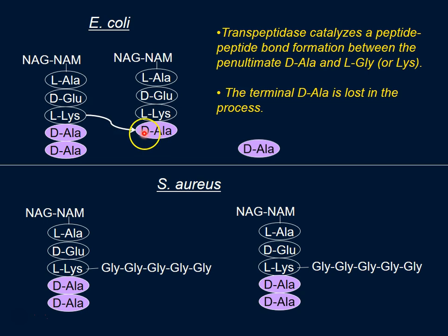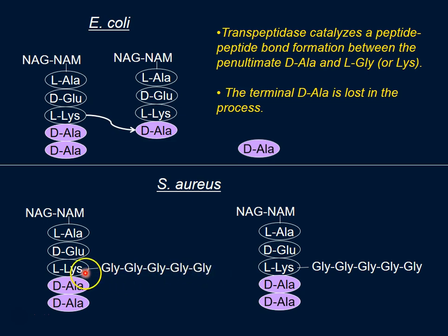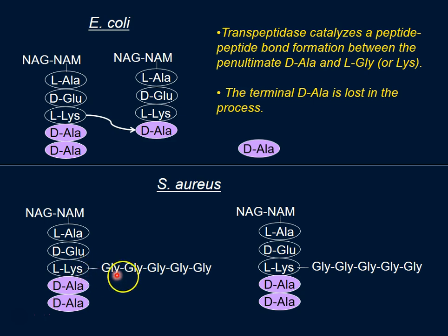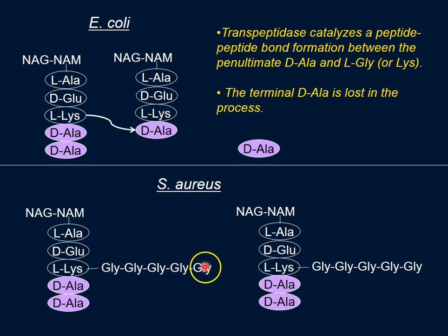In Staph aureus, instead of L-lysine being covalently linked directly to D-alanine, there's an extension arm involving five glycines. So the linkage occurs not between L-lysine and D-alanine, but between the terminal glycine of that chain and D-alanine.